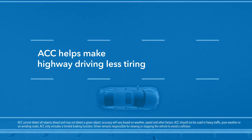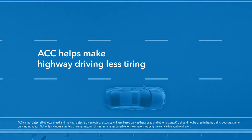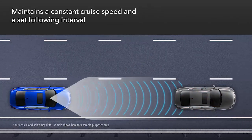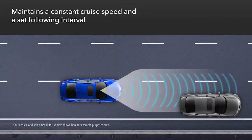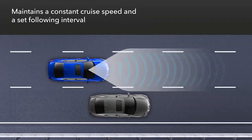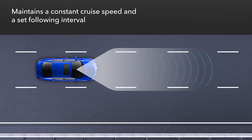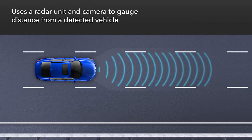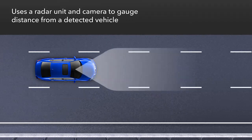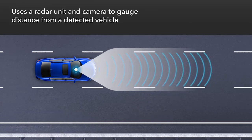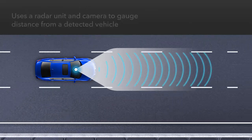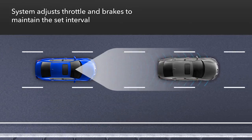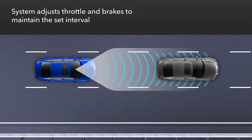Adaptive cruise control helps make it easier and less tiring to drive on the highway. This system is designed to maintain a constant cruise speed as well as a set following interval when it approaches a detected vehicle ahead. ACC uses a radar unit mounted at the front of the vehicle and a windshield-mounted camera to gauge the distance of a detected vehicle ahead. ACC then sets the appropriate throttle position and can even apply braking to maintain a preferred following interval.